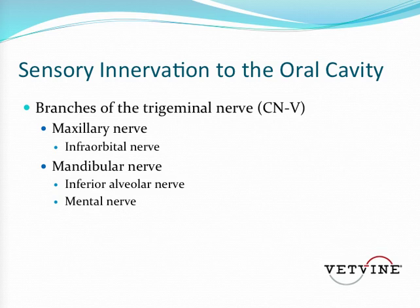If we're going to talk about giving these blocks, we're going to have to talk about the sensory innervation to the oral cavity. This is the part of the nervous system that senses the pain and sends that message to the brain — that's what we're going to try to block. The sensory innervation to the oral cavity is all branches of that fifth cranial nerve, the trigeminal nerve.